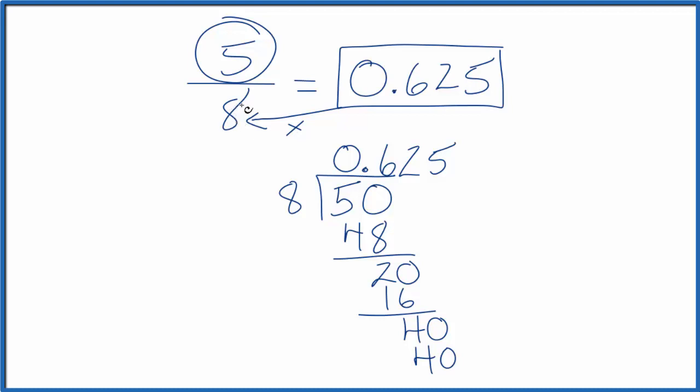This is Dr. B converting 5 eighths to the decimal 0.625. Thanks for watching.